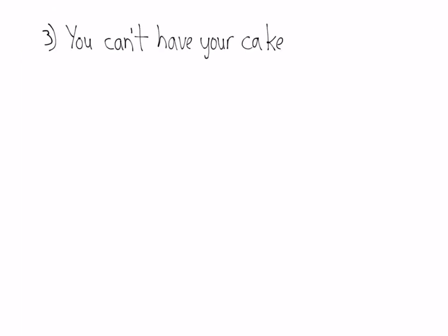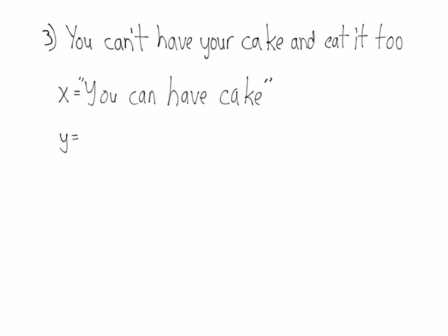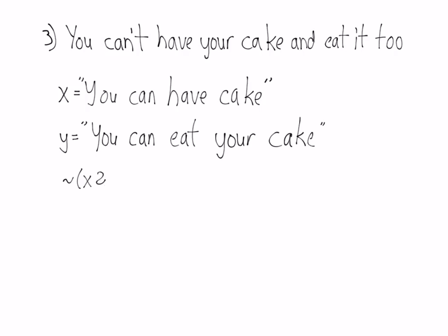Example 3: 'You can't have your cake and eat it too.' Again, you have to find simple affirmative statements: 'you can have cake' and 'you can eat your cake.' Once you've written out the variables this way, it should make sense that you can write this as the negation of 'you can have cake and you can eat cake' — so it is not the case that you can have your cake and eat your cake.